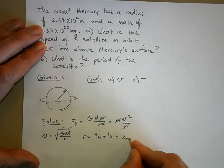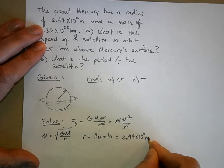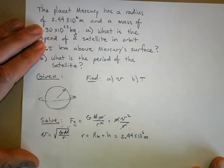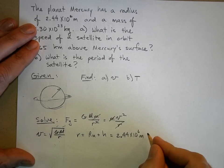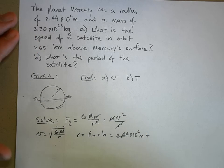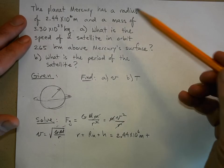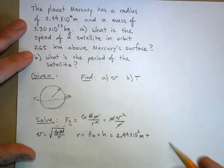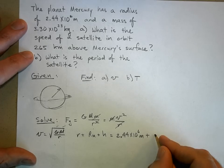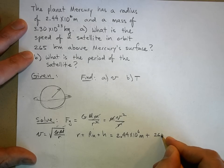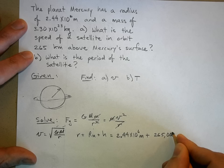The radius was given to be 2.44 times 10 to the 6 meters, plus the height. Now you have to add meters plus meters. You cannot add meters plus kilometers, doesn't make sense. So we have to take that 265 kilometers and call it 265,000 meters.